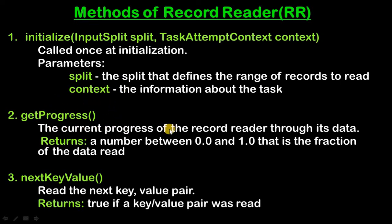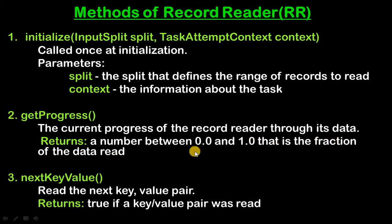The second method is getProgress, which tracks the current progress of the Record Reader through its data. The getProgress method returns a number between 0.1 and 1, representing the fraction of data read. The third method is nextKeyValue, which reads the next key-value pair and returns true if a key-value pair was read.